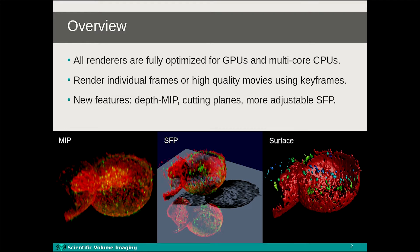Huygens currently has three different 3D renderers: the MIP or maximum intensity projection renderer, the SFP or simulated fluorescence process renderer, and the surface renderer. These allow you to take a look at your sample in an interactive and intuitive way. The renderers can be used to generate individual images or to make animations using the internal animators or movie maker. I have recently been working on improving the performance of these renderers and they now have full GPU support, allowing for much shorter rendering times and improved interactivity. Furthermore, new features have been added like a depth coded MIP, cutting planes in the surface and SFP renderers, and much more adjustability in the SFP parameters.